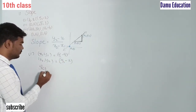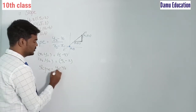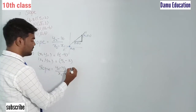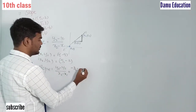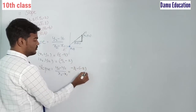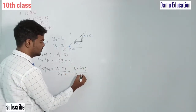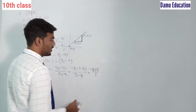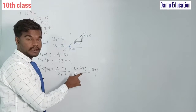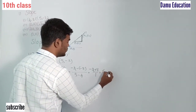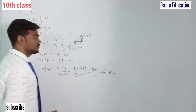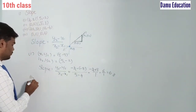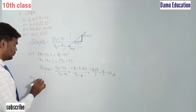So slope = (y2 - y1) / (x2 - x1). y2 is -2, minus y1 which is -8, divided by x2 - x1 which is 5 - 4. That gives us (-2 + 8) / 1 = 6/1 = 6. So the slope for the first example is 6.